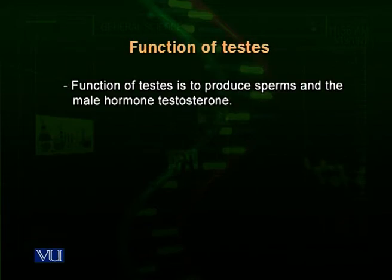The function of the testis is first to produce sperms, and second to produce a hormone called testosterone. Testosterone produces all male-like characteristics — it is a strong anabolic hormone that promotes muscle growth, which is why males typically have more and stronger muscles than females. Testosterone also promotes beard growth and affects spermatogenesis.